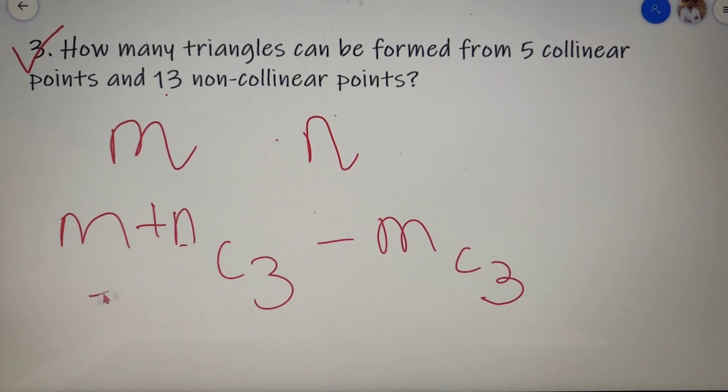In the first case we have taken total number of points and selected 3 points from it. In the first case we have taken both the collinear and non-collinear points and we have taken 3 points from it. And in the second part we have removed all the cases in which we are selecting all the 3 points from the collinear points.